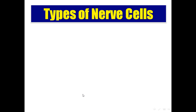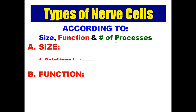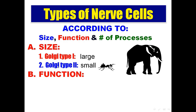Nervous cells are classified according to their size, function, and number of processes. According to size, we have large nervous cells called Golgi type 1, and small nervous cells called Golgi type 2. The main difference is that Golgi type 1 neurons have long axons, while Golgi type 2 neurons have short axons.